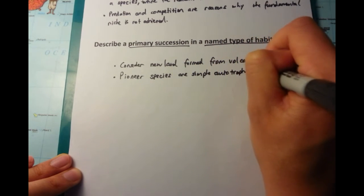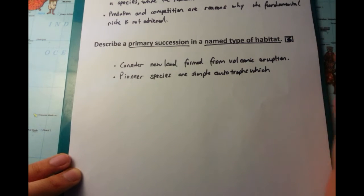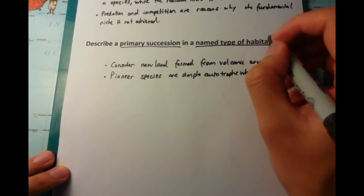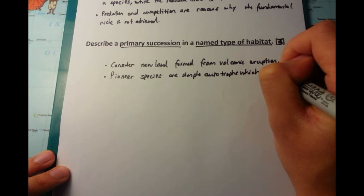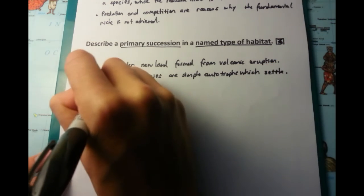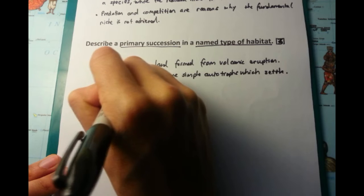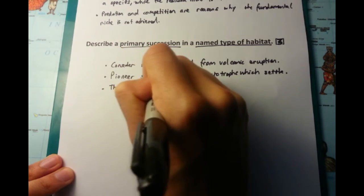What happens is that pioneer species are the first which are to settle down, and these are producers or autotrophs which settle down there. So there might be lichens or simple grass or simple moss which settle down on a blank piece of stone or blank piece of rubble for example.